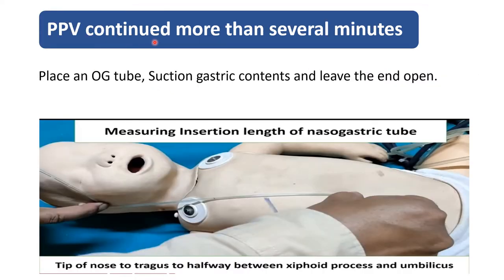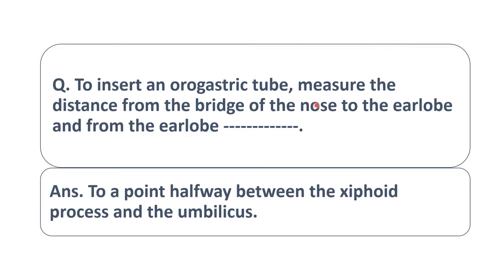When positive pressure ventilation continues for more than several minutes, always insert a nasogastric feeding tube, suction the gastric contents, and leave the end open. To measure the length of the nasogastric tube: from the tip of the nose to the tragus, then from the tragus to halfway between the xiphoid process and the umbilicus. For an orogastric tube, measure from the bridge of the nose to the ear lobe, then from the ear lobe to the point halfway between the xiphoid process and the umbilicus.